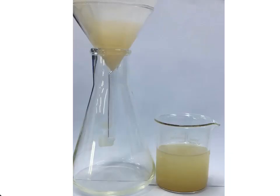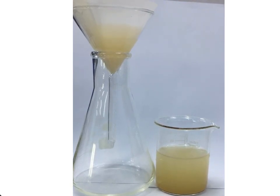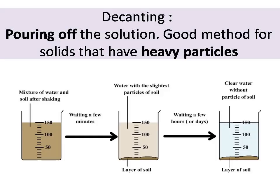The substance trapped inside the filter paper is called the residue, whereas the substance that passes through is called the filtrate. Decanting is another separating technique for separating undissolved solid from liquid. After a while, solid particles settle down to the bottom of the container, leaving the solution clear, so you can pour it off and separate it easily.